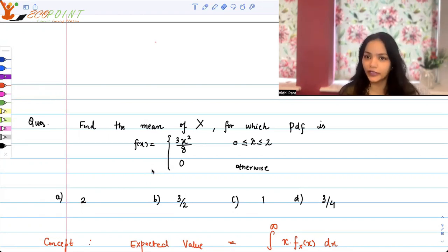Let's work it out and find the correct mean. The mean of x where the pdf for this random variable x is 3x² upon 8 when x is between 0 to 2. So let's figure out what will be the mean.